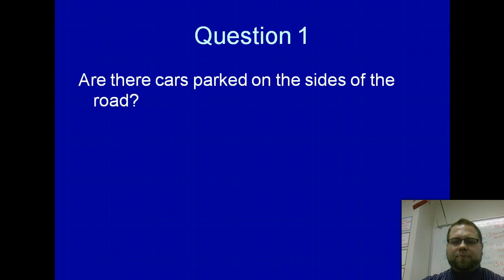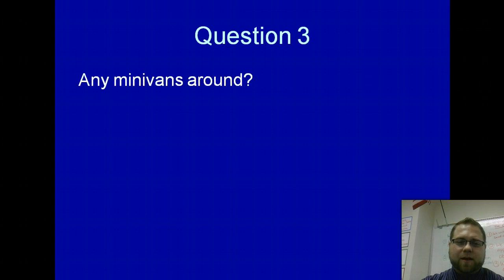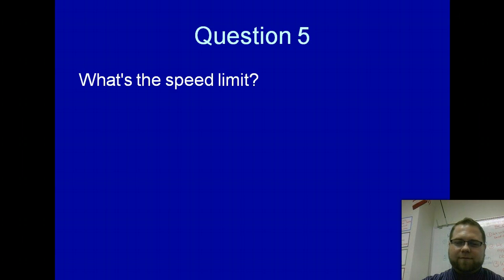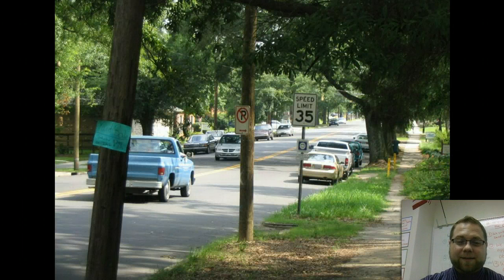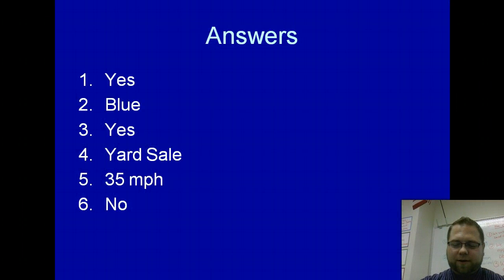Are there cars parked on the sides of the road? What color is the pickup truck driving in the road? Are minivans in the picture? What does the blue sign say? What is the speed limit? Are there any pedestrians on the road? So we see there are cars parked. There's a minivan. The speed limit is 35. And we don't see any pedestrians anywhere.